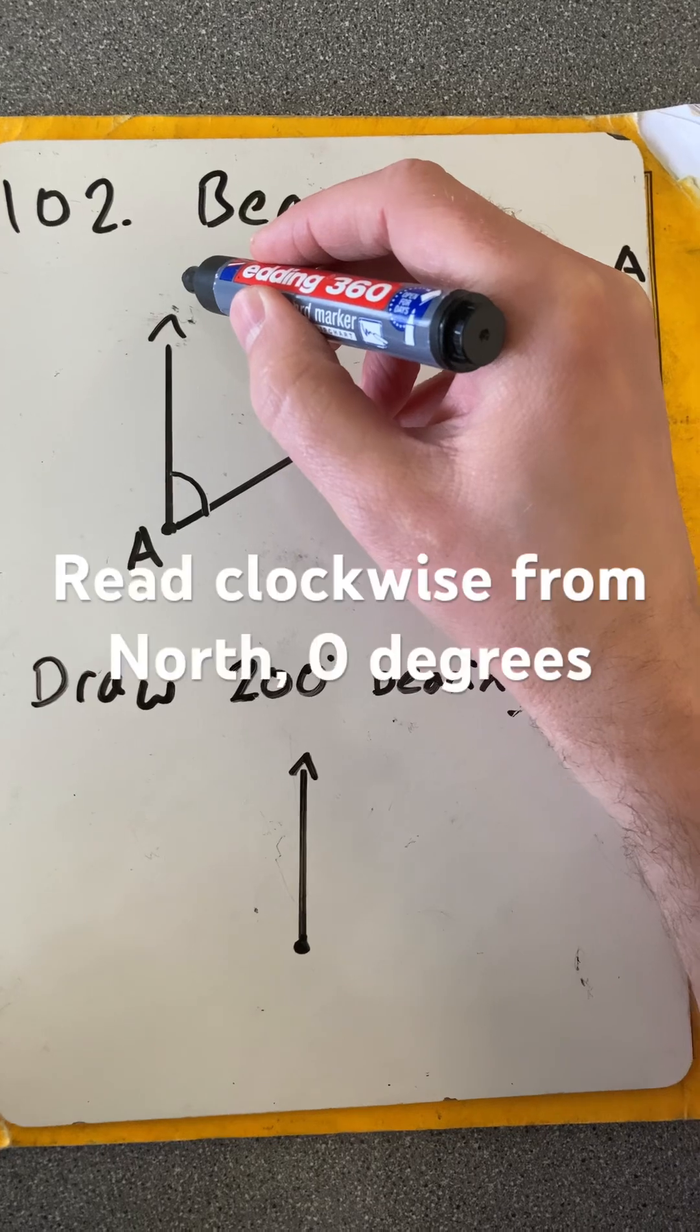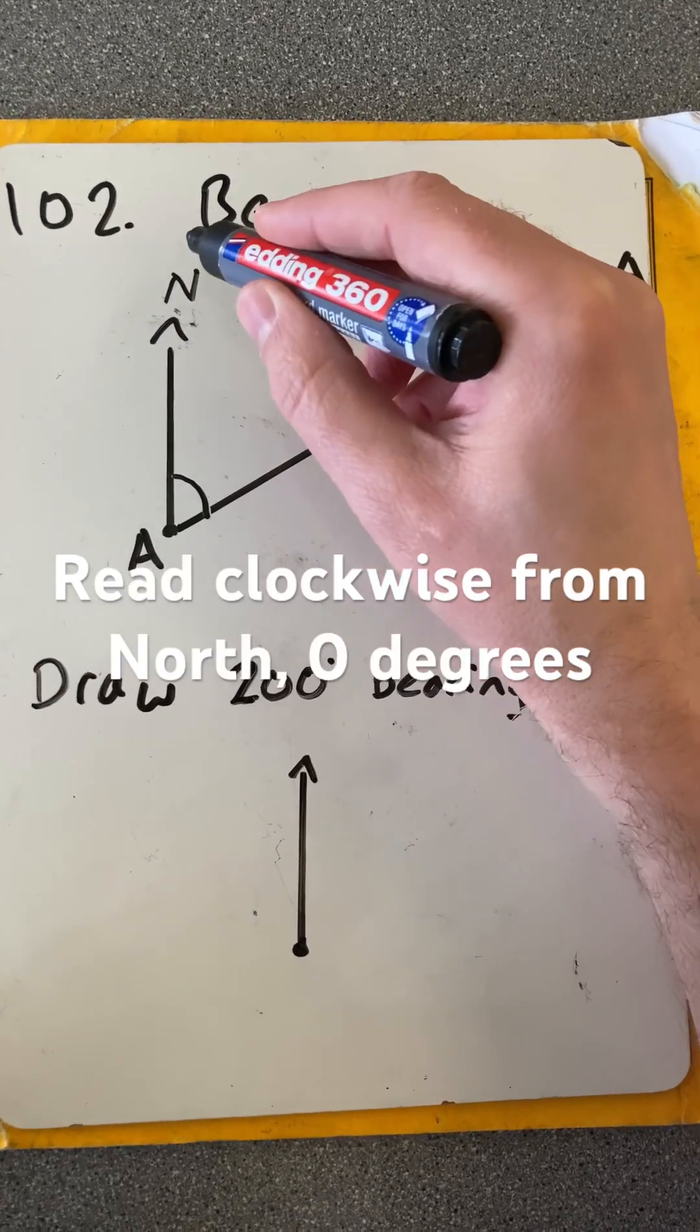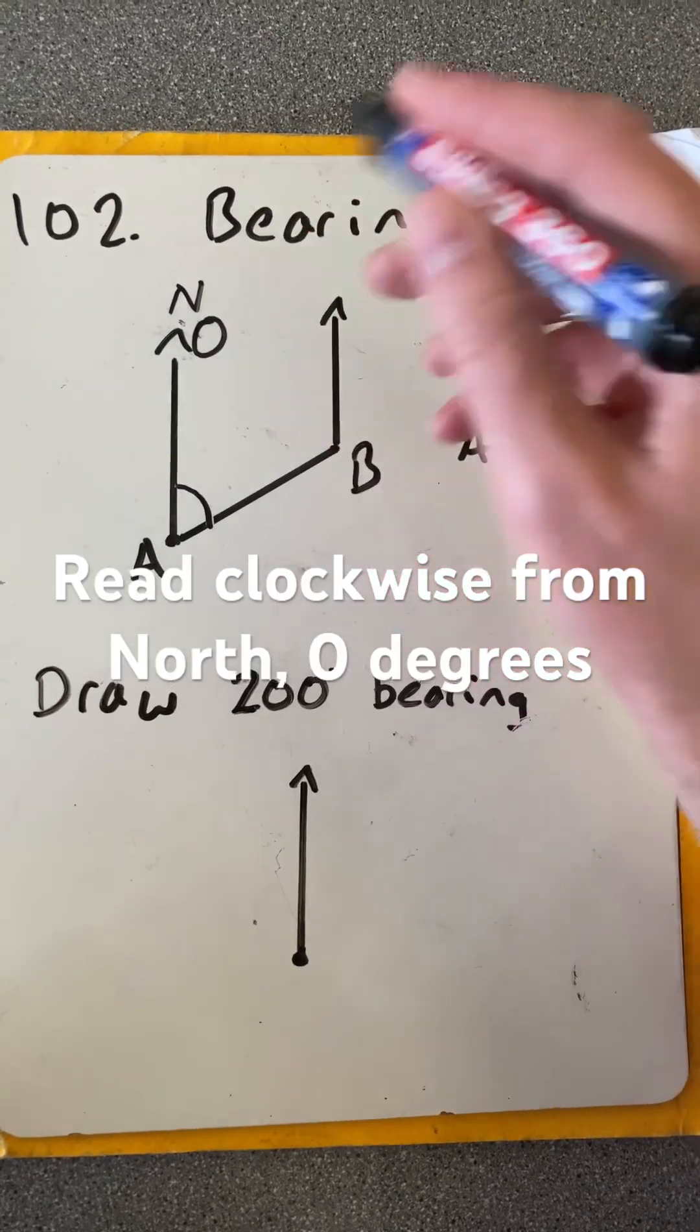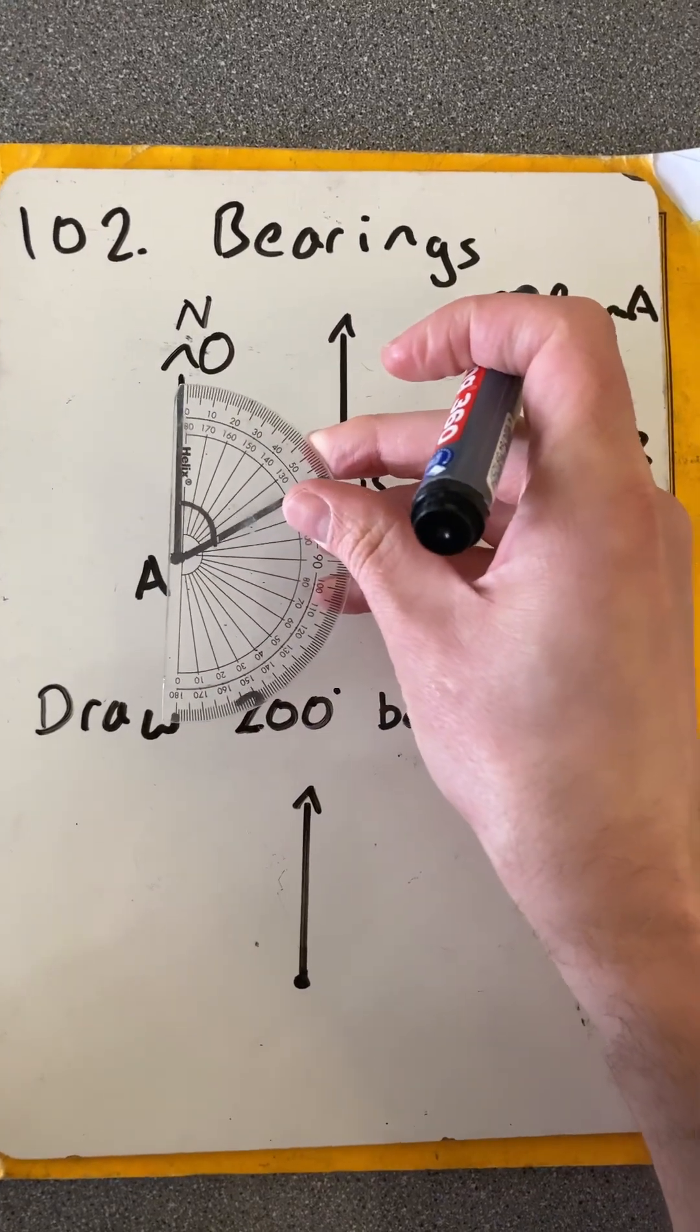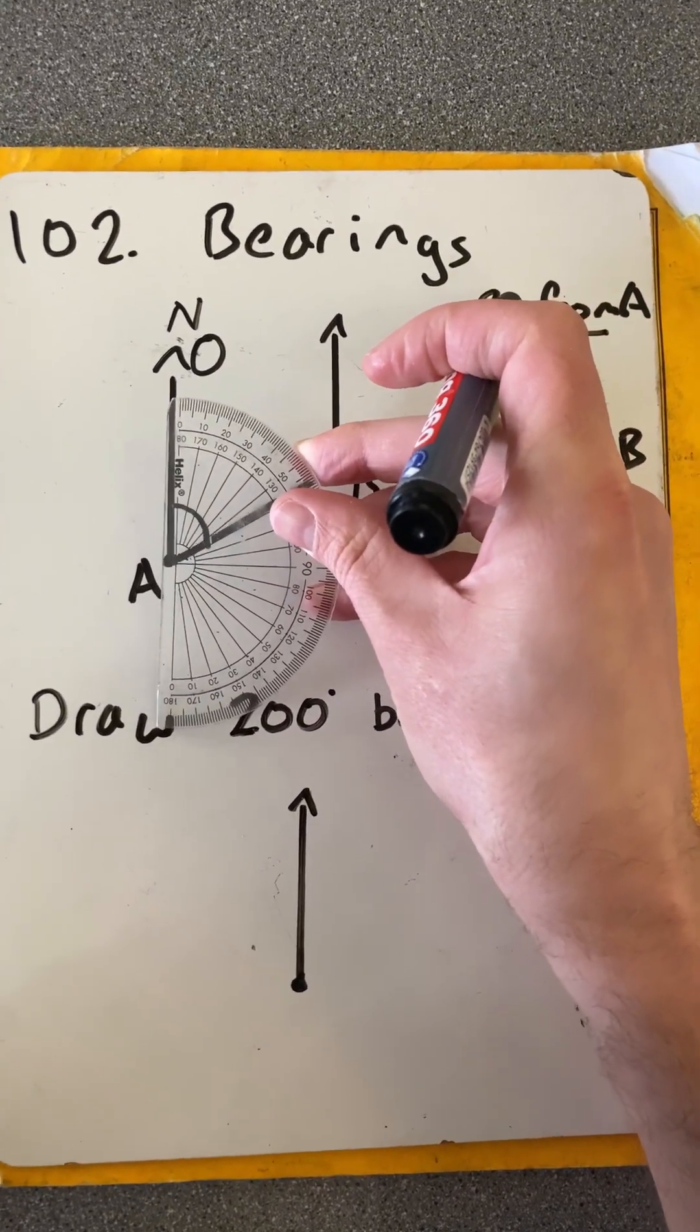Now we always read clockwise from north. North is always up, so that's zero. And then we use a protractor. Place that cross like I did in my angles videos, and now to use a protractor.